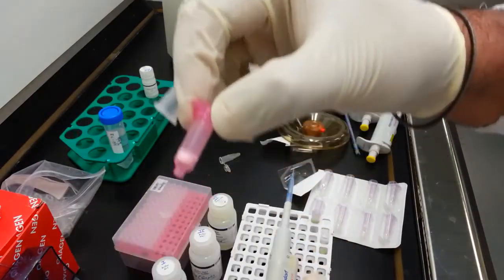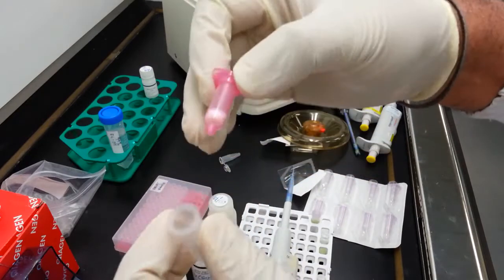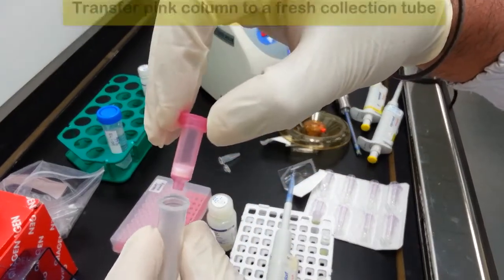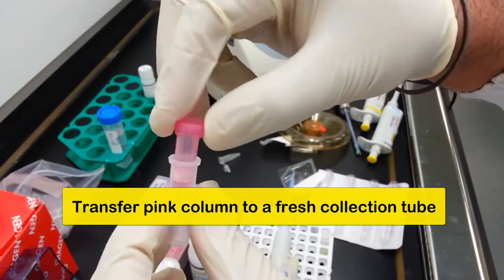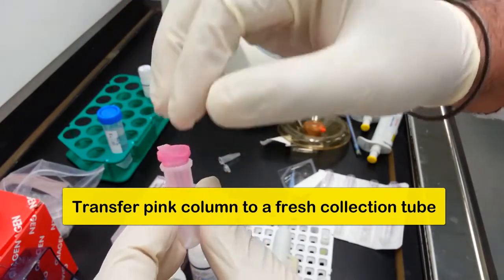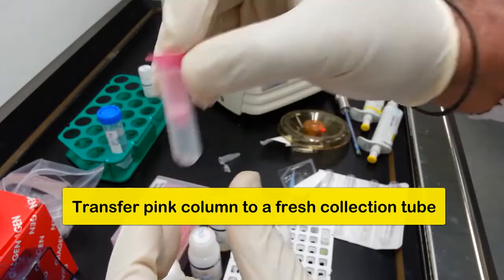The next step involves drying of this column in order to eliminate any residual moisture or alcohol which may interfere with the downstream processing of RNA. In order to do this, place the tube in a fresh collection tube.